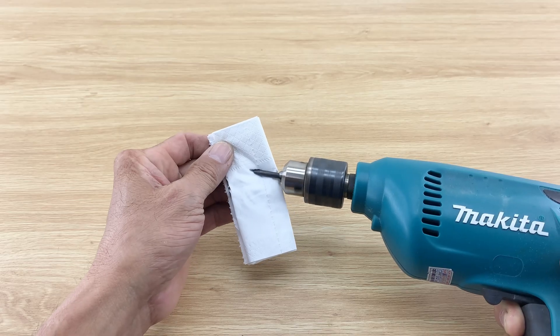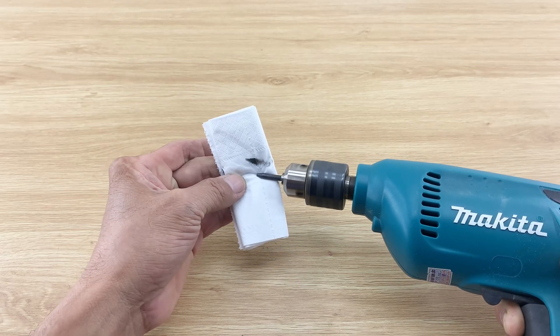Once sharpened, I clean the tip with paper while it's still spinning to remove any residue.